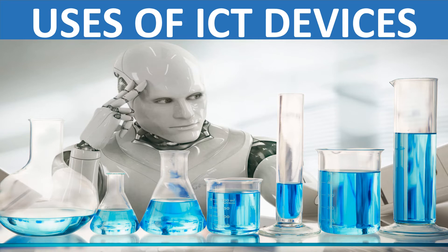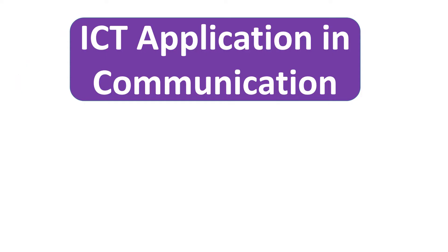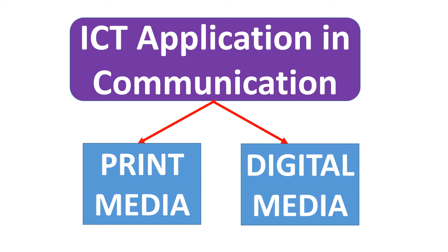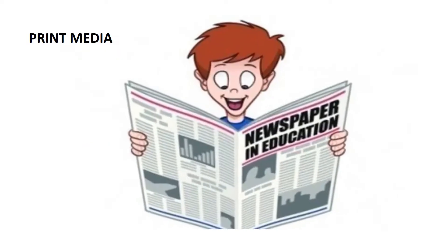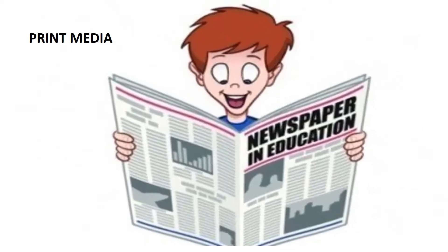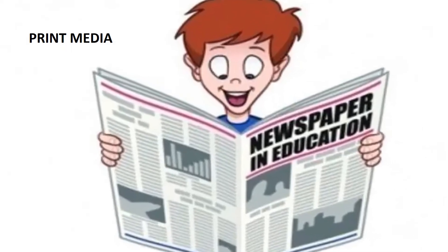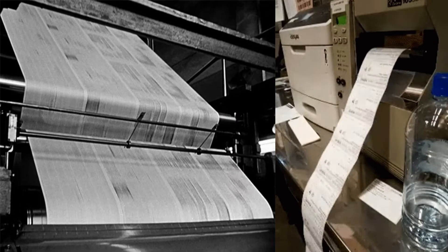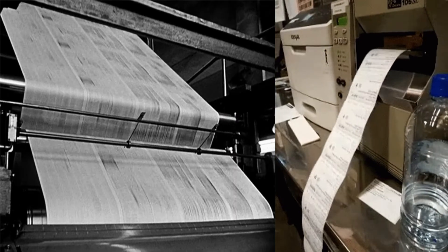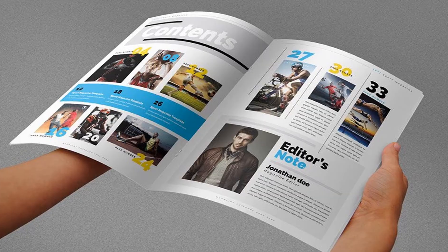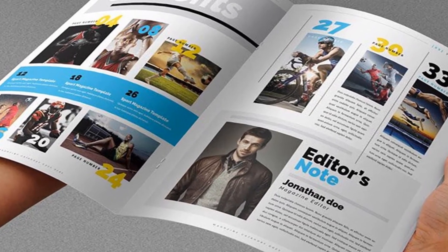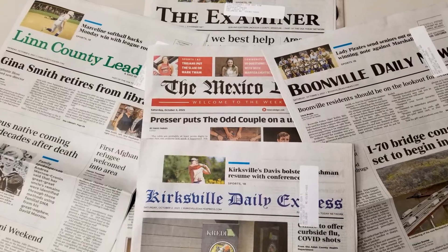Uses of ICT devices. ICT application in communication is done in two forms: print media and digital media. Print media is a form of communication used to spread information in printed form, such as magazines, newspapers,